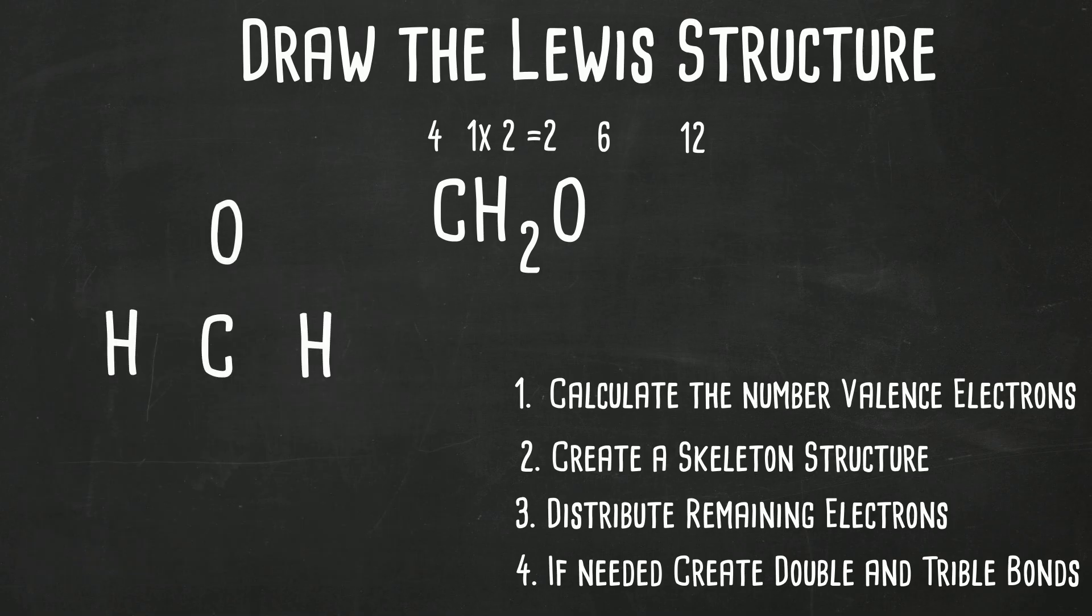Let's begin by placing some single bonds. So we have one between hydrogen and carbon, so that'll be two of those. And then carbon and oxygen, so we've used up six electrons.